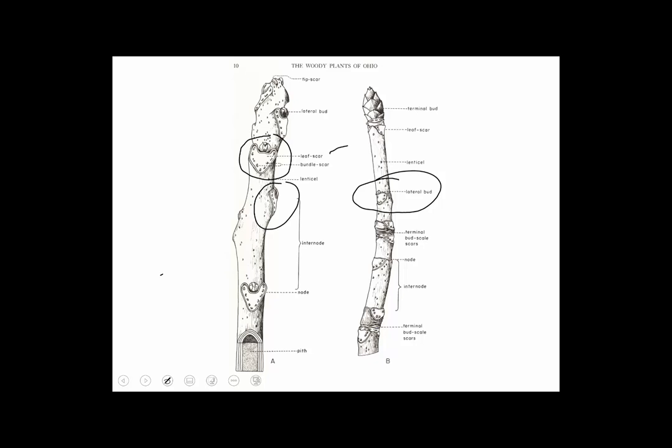Where the base of the leaf was attached is called the leaf scar, and naturally their shape and size is useful for identifying the plants. Often within the leaf scar are smaller, typically dot-like scars that are called bundle scars.